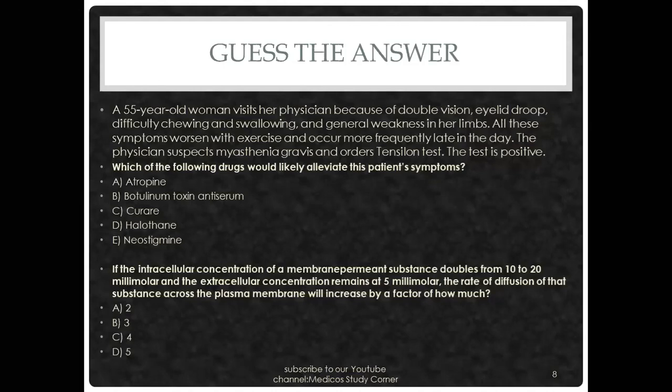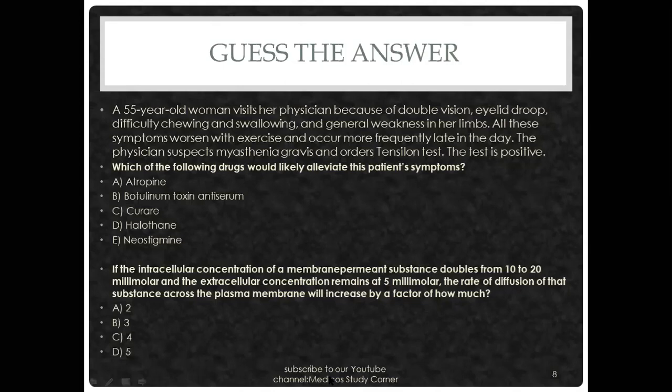A 55-year-old woman visits her physician because of double vision, eyelid droop, difficulty chewing, swelling, and general weakness in her limbs. All these symptoms worsen with exercise and occur more frequently later in the day. The physician suspects myasthenia gravis and orders a Tensilon test. The test is positive. Which of the following would likely alleviate the patient's symptoms?